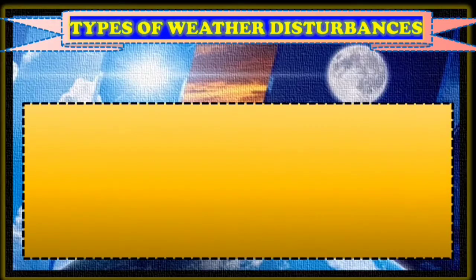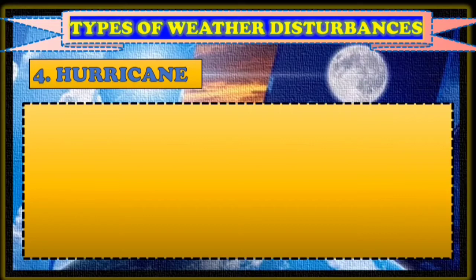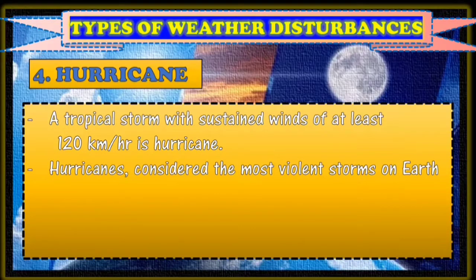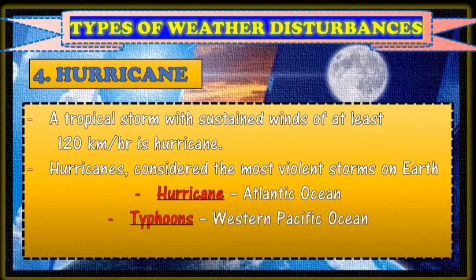Number four is what you call hurricane. A tropical storm with sustained winds of at least 120 km per hour is what you call a hurricane. Hurricanes are considered the most violent storms on earth. Hurricanes have several names depending on the location where they are found. When it is in the Atlantic Ocean, it is called hurricane. When it is in the Western Pacific Ocean, it's called typhoon. But when in the Indian Ocean, it is called cyclone.